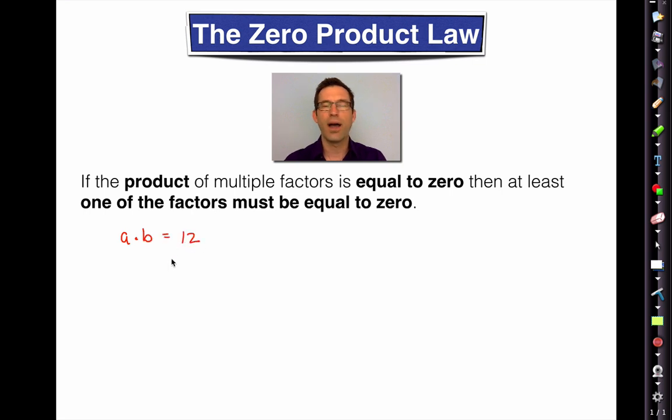If I told you that two numbers, a and b, had a product of 12, one of them doesn't have to be 12, right? a could be three, b could be four. If I told you that the product of two numbers was equal to one, as long as you're comfortable with fractions, no problem, then I could have three times one-third. On the other hand, if a times b is equal to zero, then either a must be equal to zero or b must be equal to zero. There's no way to take two non-zero numbers, form their product, and get zero.